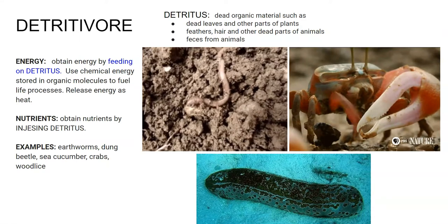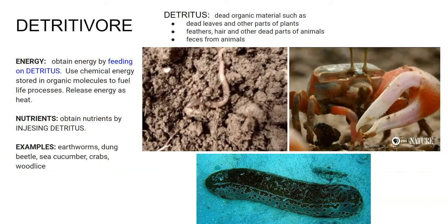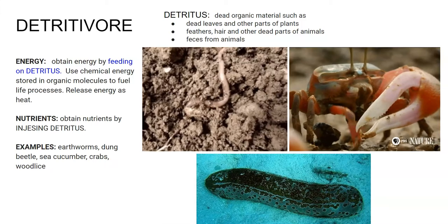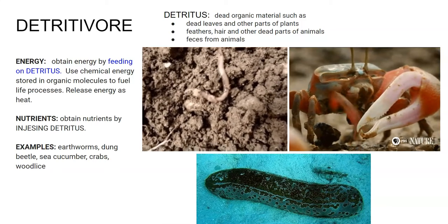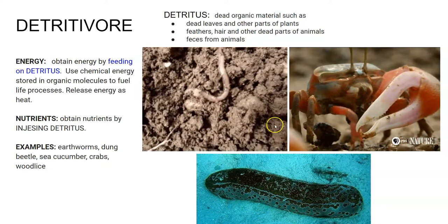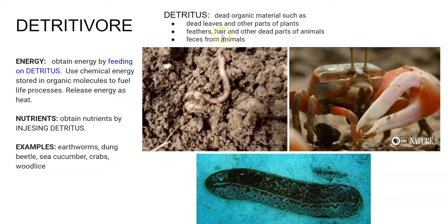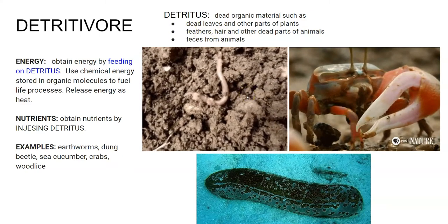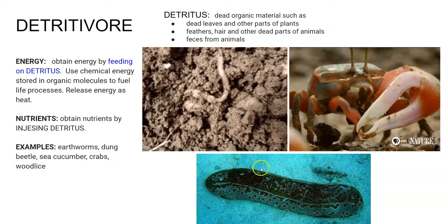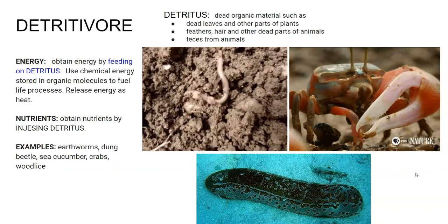A detritivore obtains energy by feeding on detritus — dead organic material such as dead leaves and other plant parts, feathers, hair, other dead animal parts, and feces. For example, an earthworm literally eats earth matter, the organic matter in the soil, which is made up of a lot of detritus: dead things that are decomposing, bacteria, and feces. Other examples include dung beetles, sea cucumbers, crabs, and wood lice. Detritivores eat dead organic material and still release energy as heat.